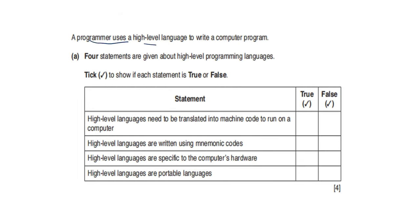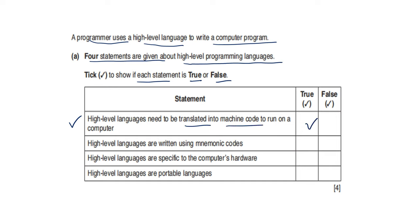A programmer uses a high level language to write a computer program. Four statements are given about high level programming languages — tick to show if each is true or false. High level languages need to be translated into machine code to run on a computer — true. High level languages are written using mnemonics code — false, because assembly language uses mnemonics and assembly language is a low level language. High level languages are specific to the computer hardware — false. High level languages are portable languages — true.